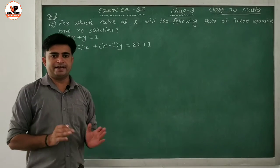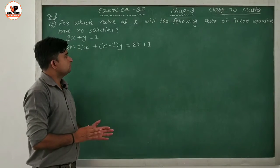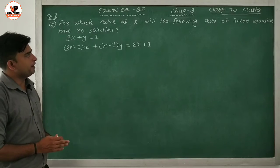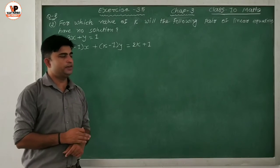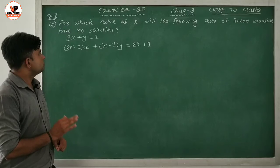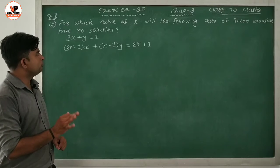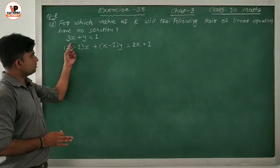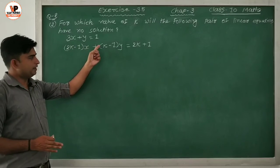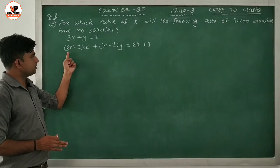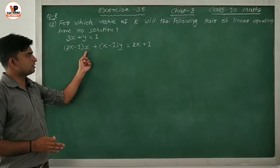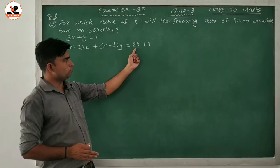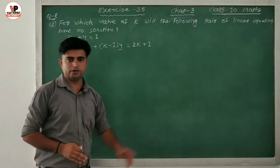Now let's see the second number. For which value of k will the following pair of linear equations have no solution? The equations are: 3x + y = 1, and (2k - 1)x + (k - 1)y = 2k + 1.